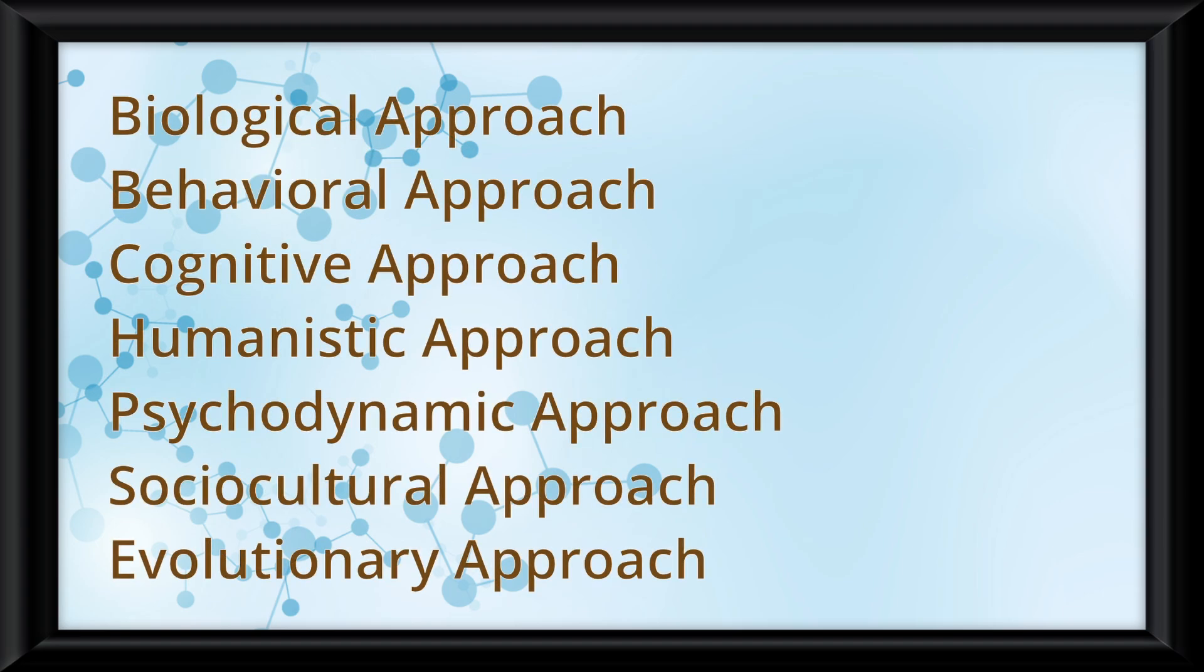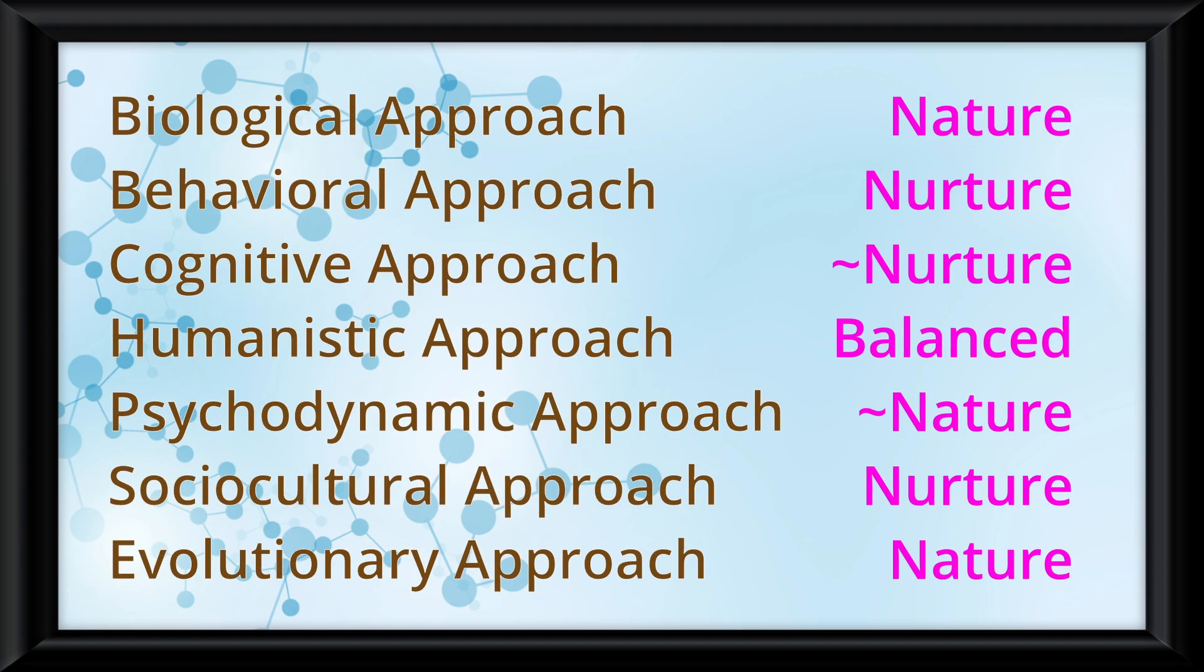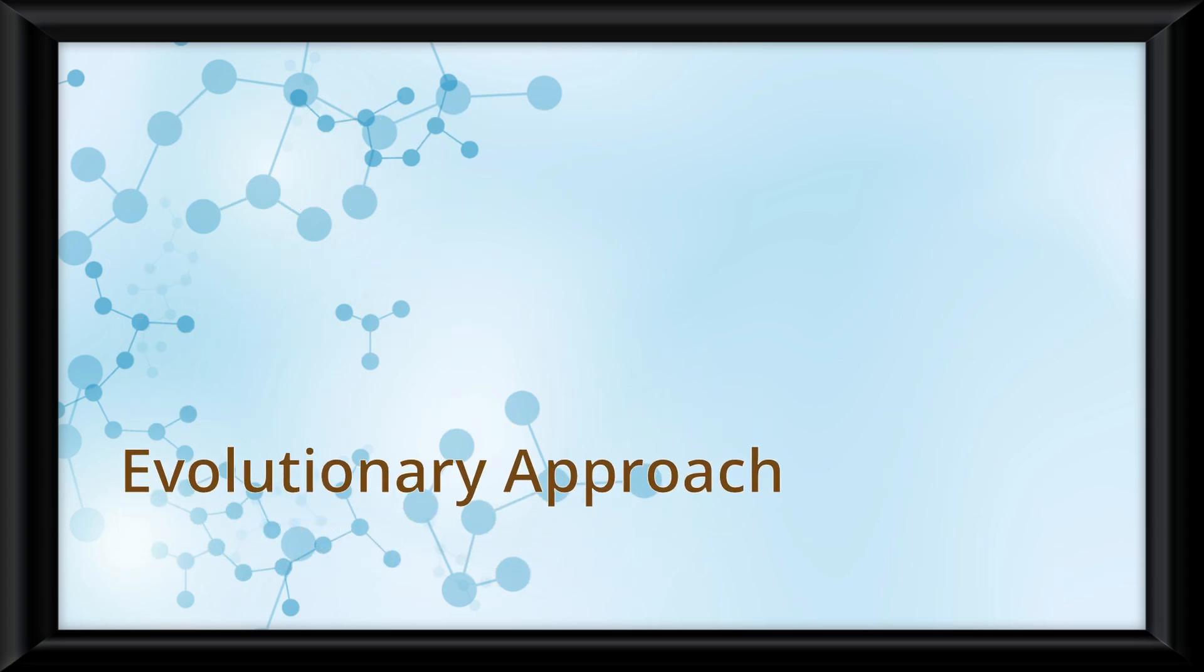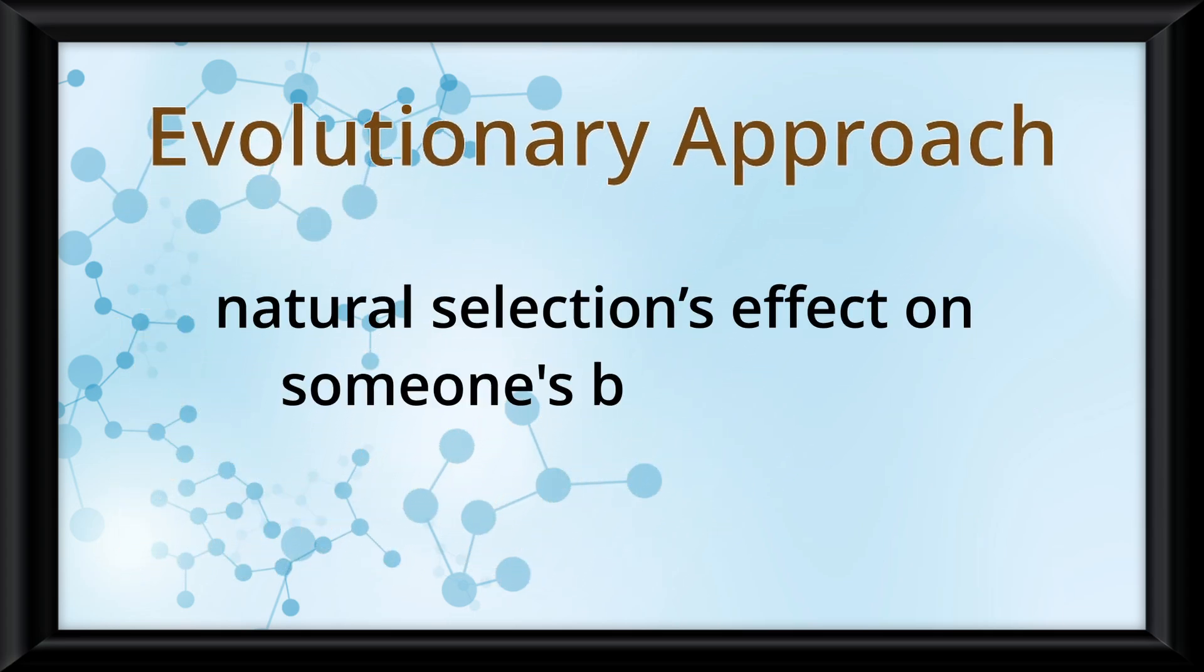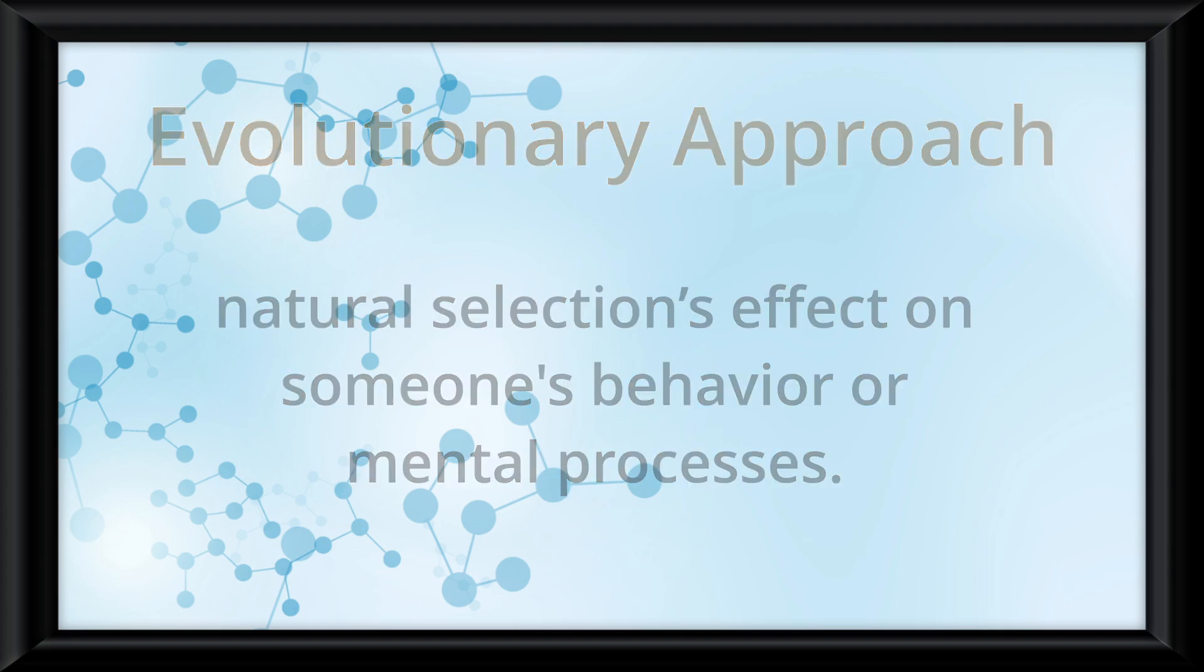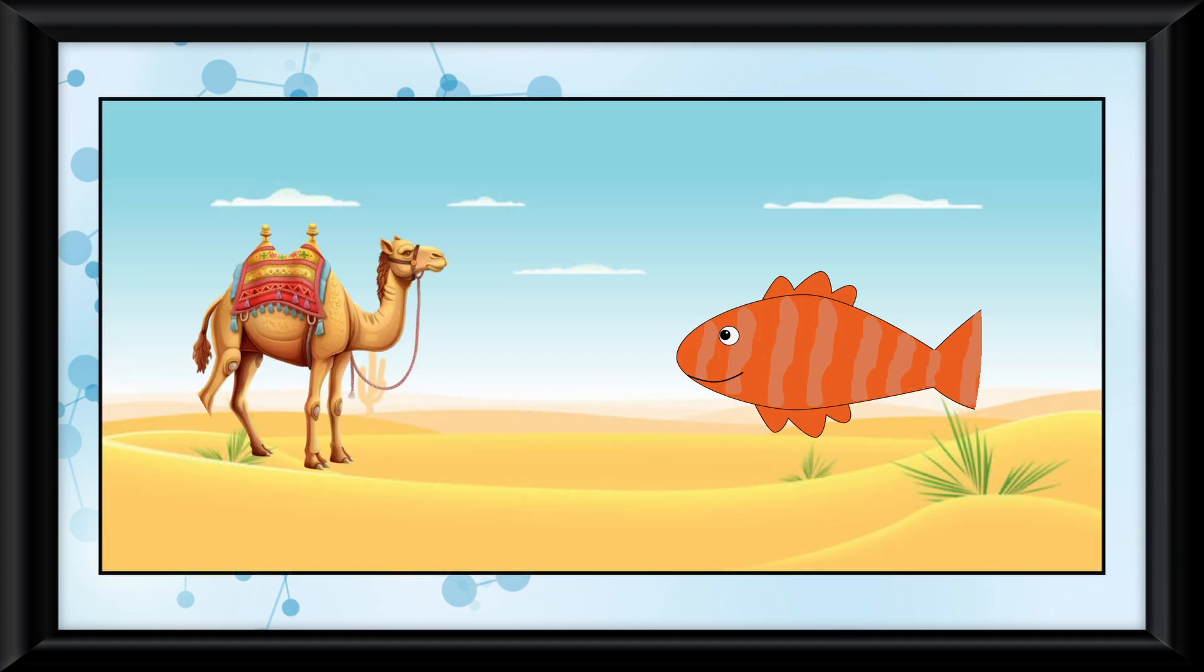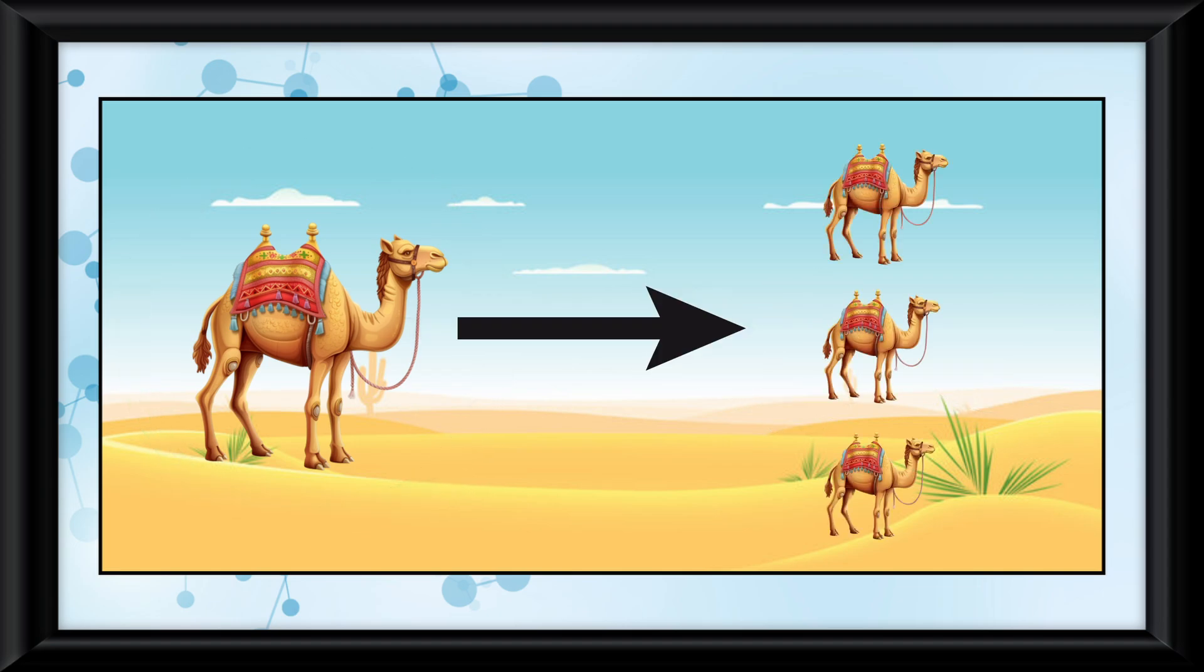There are many different approaches to psychology that all have their own answer to this question. For example, if we look at the evolutionary perspective championed by Charles Darwin, it explores natural selection's effect on someone's behavior or mental processes. Of course, natural selection is the evolutionary principle that animals and organisms that are more adapted to their environment are more likely to survive and pass on the genes that aided their successes to future generations.